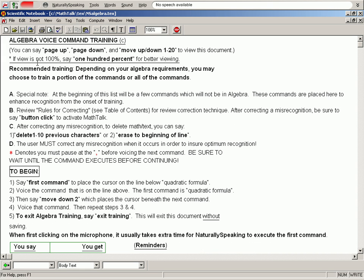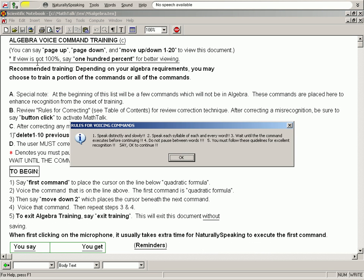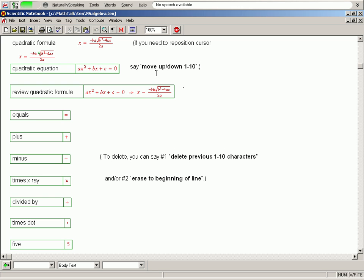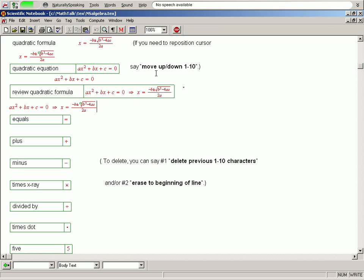First Command. OK. Quadratic Formula. Move Down 2. Quadratic Equation. Move Down 2. Review Quadratic Formula. Move Down 2. Equals. Move Down 2.